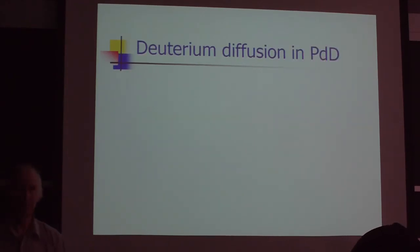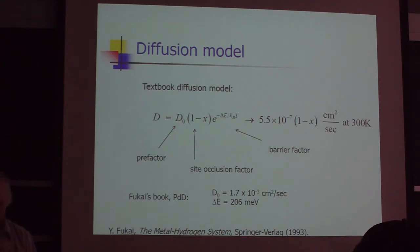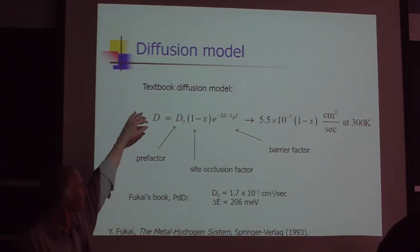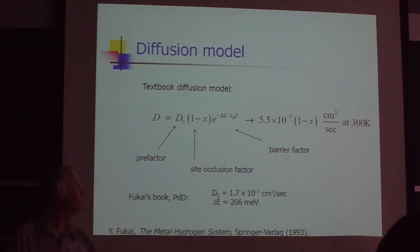I want to talk a little bit about deuterium diffusion in the palladium deuteride system, which refers to the question of when the deuterium goes in, where does it go? When it goes in initially, it goes in the surface. And I'll talk about the electrochemistry at the beginning of next lecture. If you look at the textbook, diffusion works like this. The diffusion coefficient has a pre-factor, an exponential factor, and a barrier energy type factor.